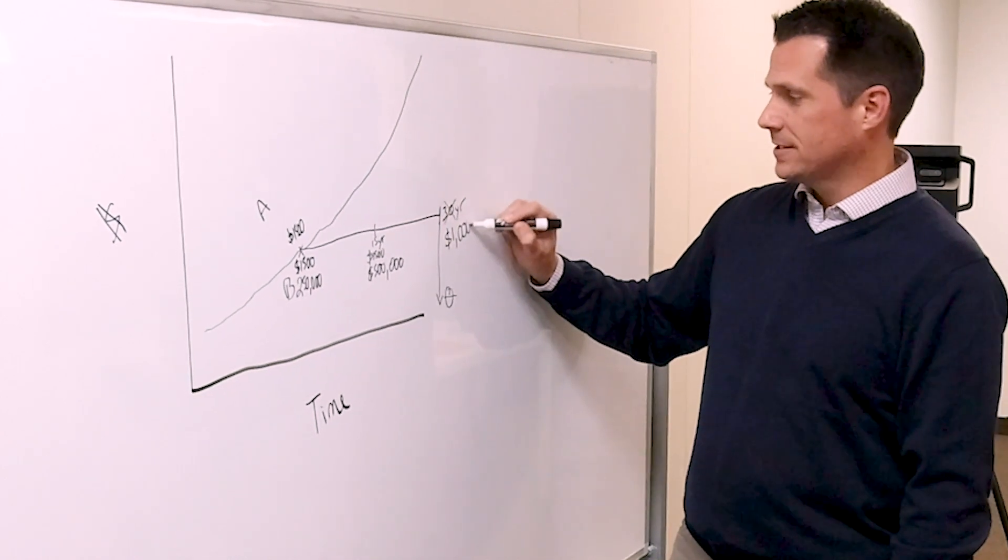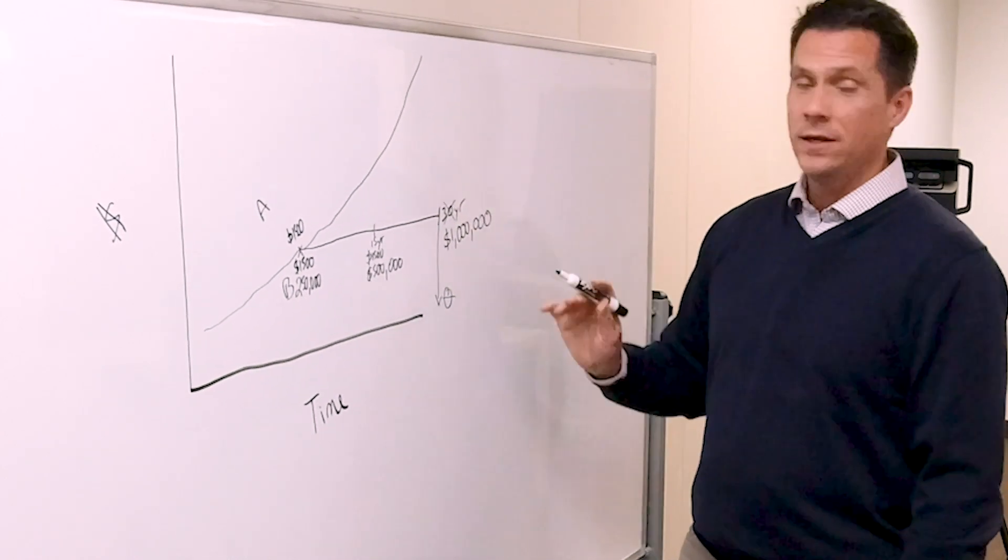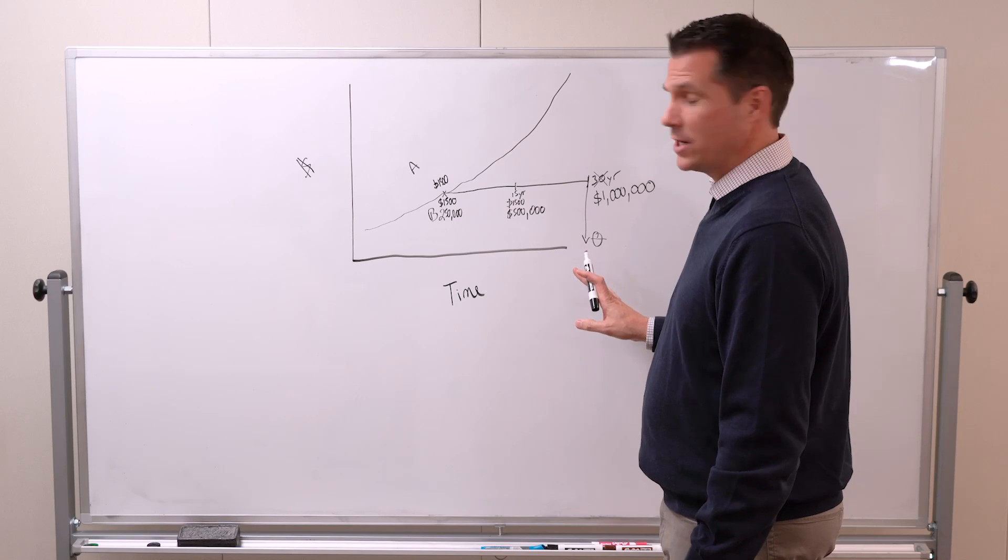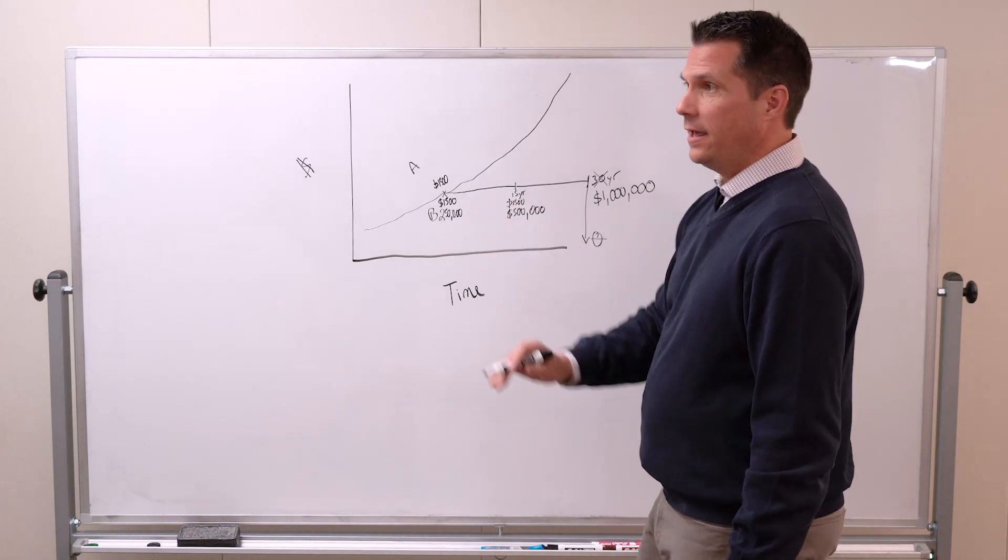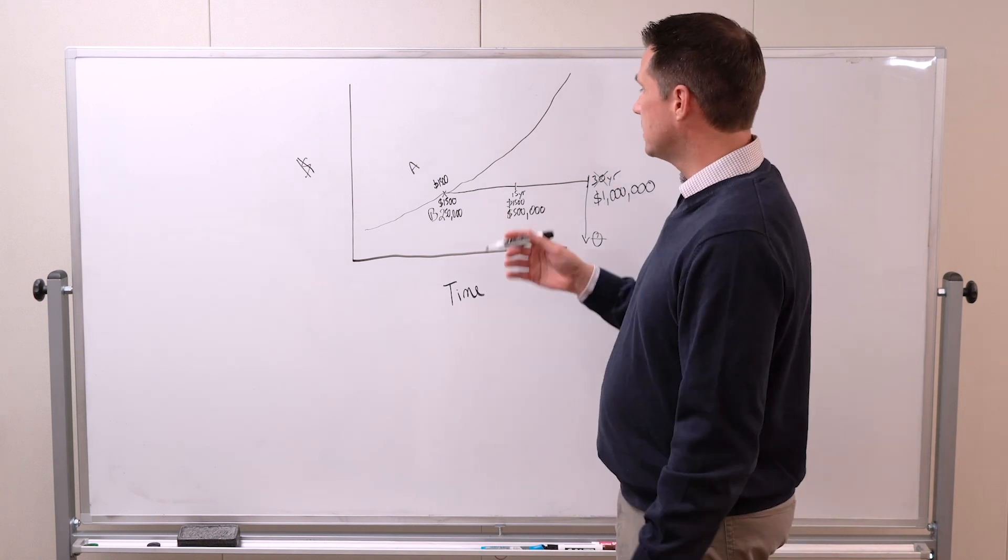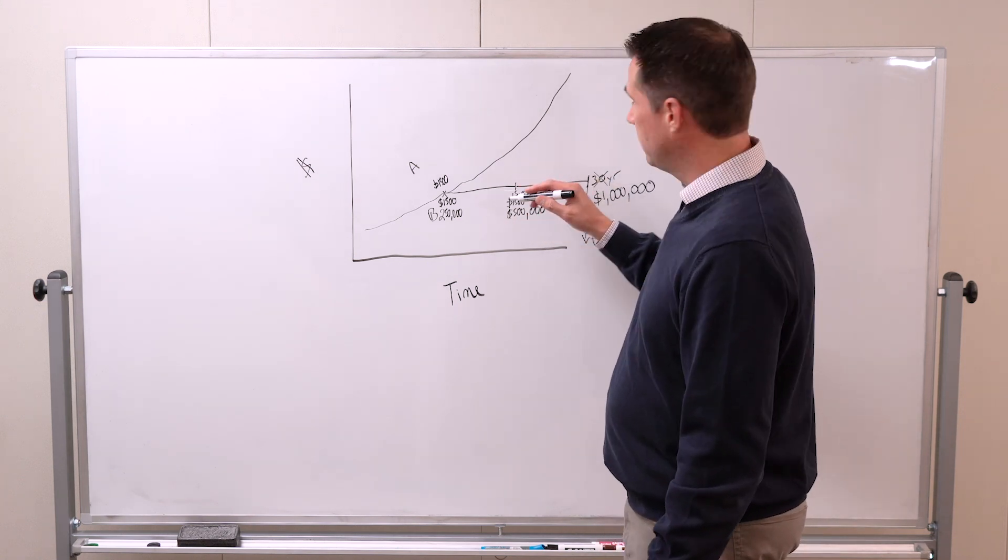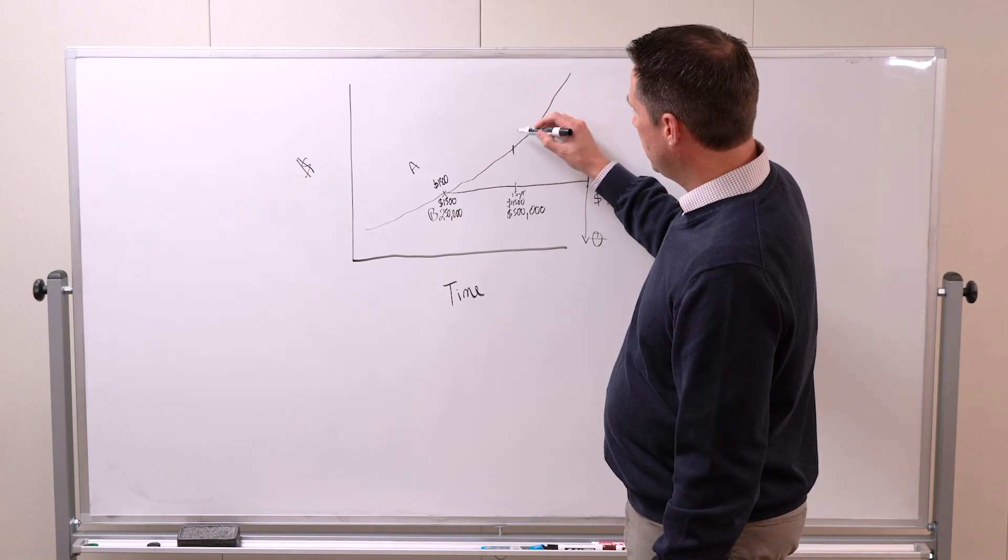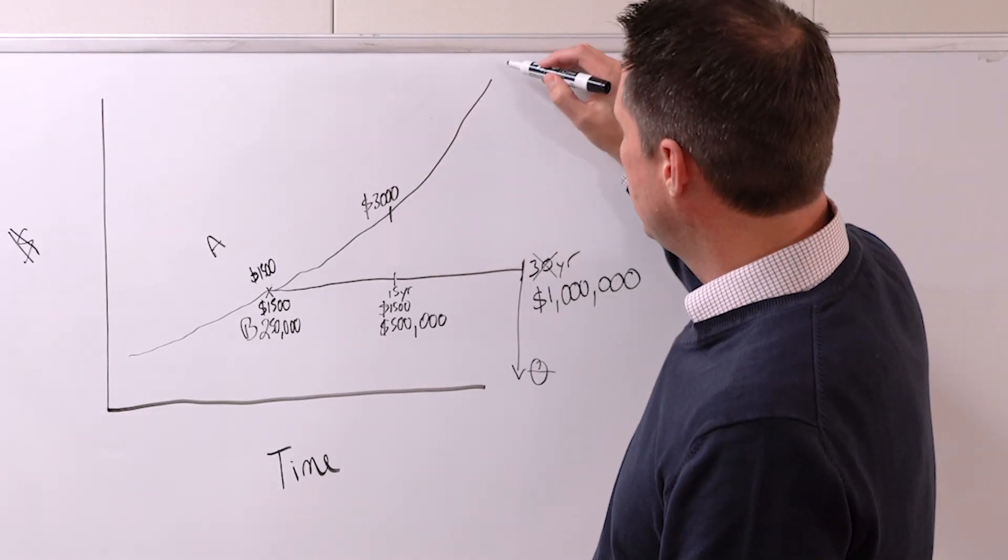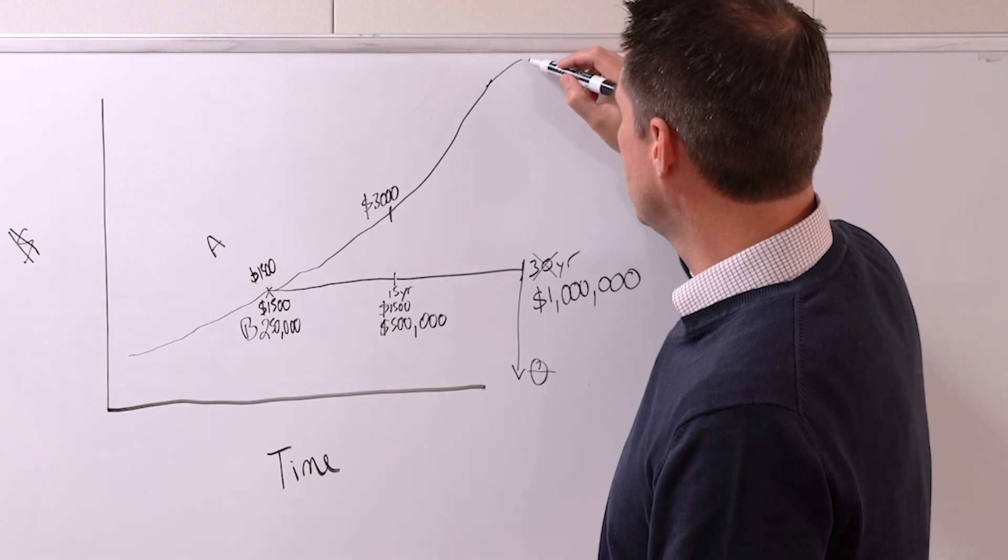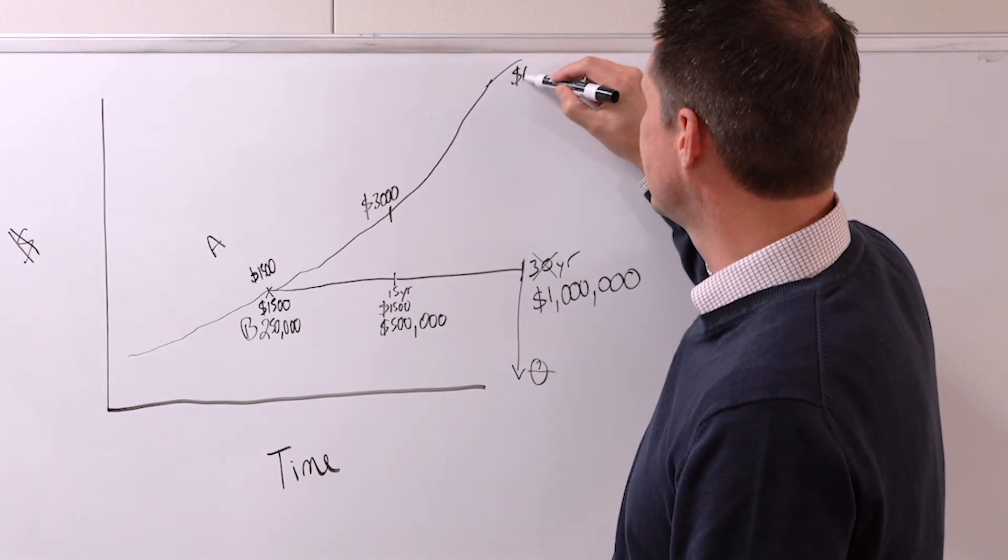So his house is now worth one million dollars, which is pretty crazy, and he has no payment on it. But Friend A—let's say Friend A never managed to figure this out and the advantages of owning. So in 15 years his rent is now $3,000, and in 30 years let's say it goes now to $6,000.